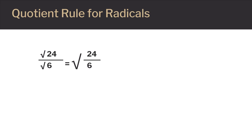To divide the square root of 24 by the square root of 6, you can rewrite it as a single radical — the square root of 24 divided by 6. Under the radical you have 24 divided by 6, which is 4. Therefore, the square root of 24 over 6 is equal to the square root of 4. Since 4 is a perfect square, the square root of 4 equals 2. That's the final answer.